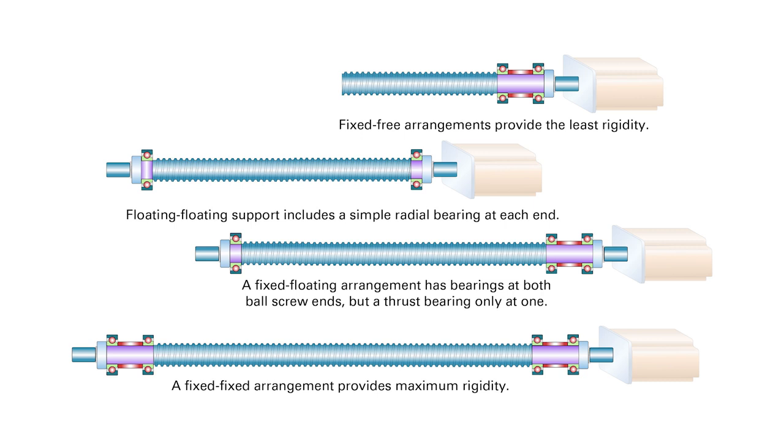And remember, the reason rigidity is important for ball screw assemblies is to reduce axial deflection and ensure the screw's positioning accuracy isn't compromised.